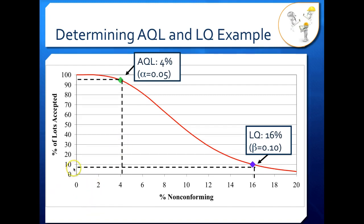If we want to look at our LQ, we use a beta of 0.1, so we read on our 10% line. Remember, we're already in percent acceptance, so we do not need to subtract from 1. We then read down to see that our LQ is about 16%. So we have a pretty high percent nonconforming in our consumer's risk of accidentally accepting a nonconforming lot.